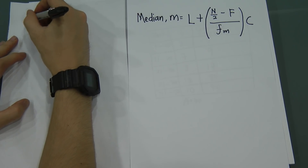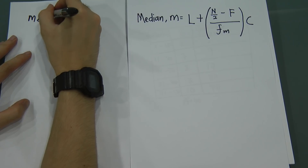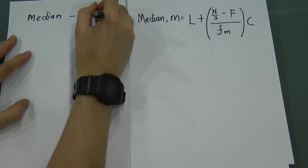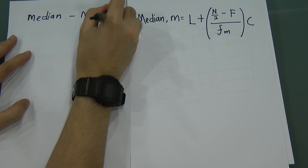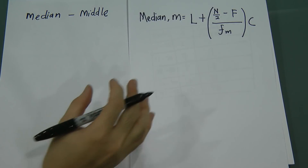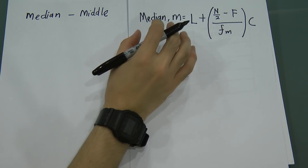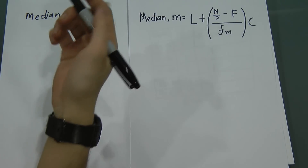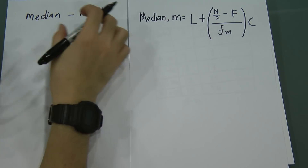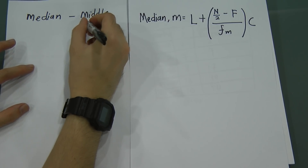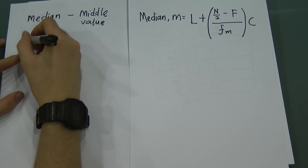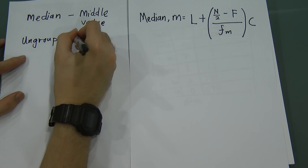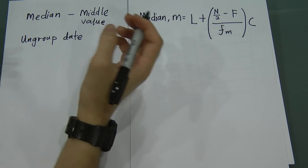Median — the meaning is actually the same as 'middle.' Normally, you use this word in the statistics chapter, which means the middle value. So you want to find the middle value. For example, I'll give ungrouped data, meaning the data is not grouped into classes.